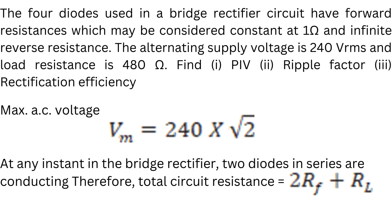In this video we will discuss problems on rectifiers. The four diodes used in a bridge rectifier circuit have a forward resistance, considered constant at 1 ohm, and infinite reverse resistance. The alternating supply voltage is 240 volts RMS and load resistance is 48 ohms.